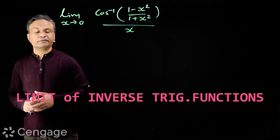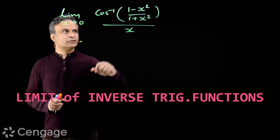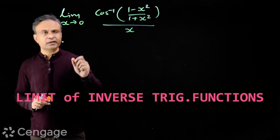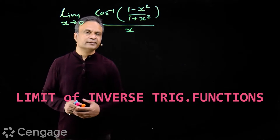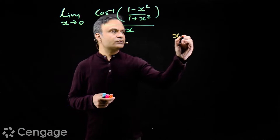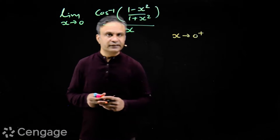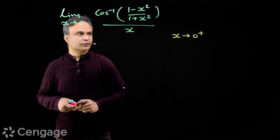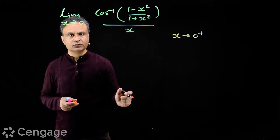Let us evaluate this limit if it exists: limit as x tends to zero of cos⁻¹((1 - x²)/(1 + x²)) divided by x. At the outset we can say this limit does not exist, because when x approaches zero from the right hand side, the numerator will take a positive value and the denominator will be zero plus.